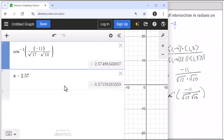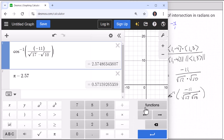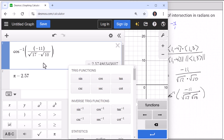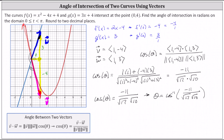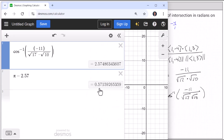Taking the inverse cosine of both sides, theta equals the inverse cosine of negative eleven divided by the product of the square root of seventeen and the square root of ten. Going to the calculator — making sure it is in radian mode — using the inverse cosine function, to two decimal places we get approximately 2.57 radians. We'll call this theta sub one, which is the obtuse angle of intersection. To find the acute angle, since the angles are supplementary, theta sub two is approximately pi minus 2.57 radians, which equals approximately 0.57 radians.